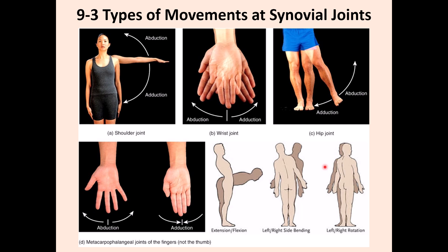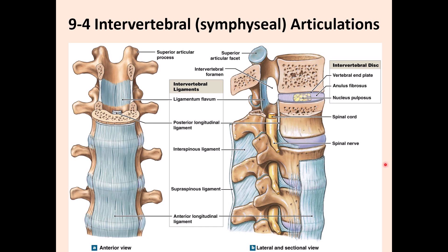The vertebral column articulations include the vertebral bodies connected anteriorly by intervertebral discs. Each intervertebral disc has three parts: the vertebral end plate (hyaline cartilage attached to the vertebral body), the annulus fibrosus (outer ring of collagen fibers), and the nucleus pulposus (gelatinous protein in the center). Over time, the fluid in this area decreases and the collagen fibers of the annulus fibrosus can become damaged.